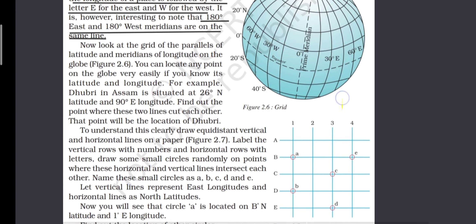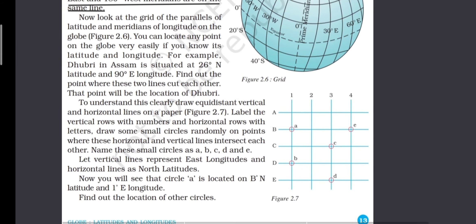An activity is given, and after understanding it, it will become very clear how we are actually locating any place on the earth. To understand this clearly, draw equidistant vertical and horizontal lines on a paper.